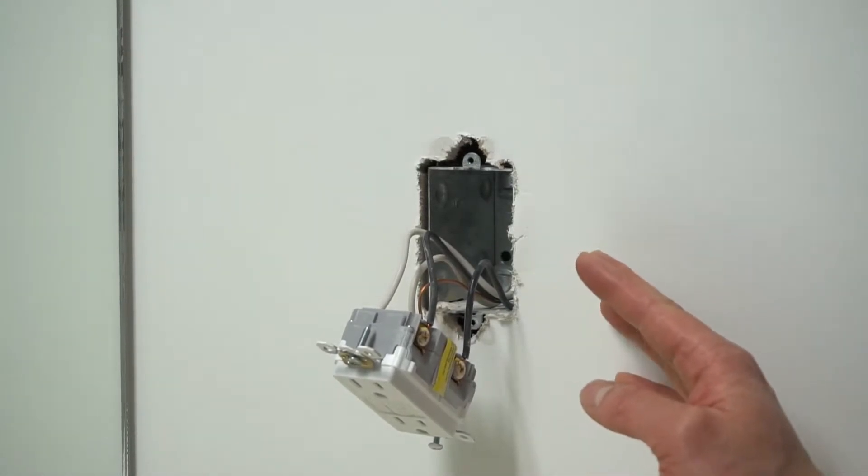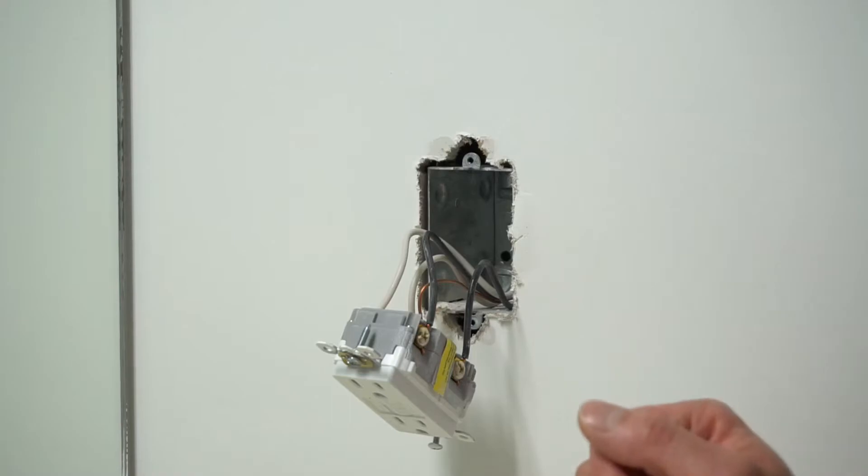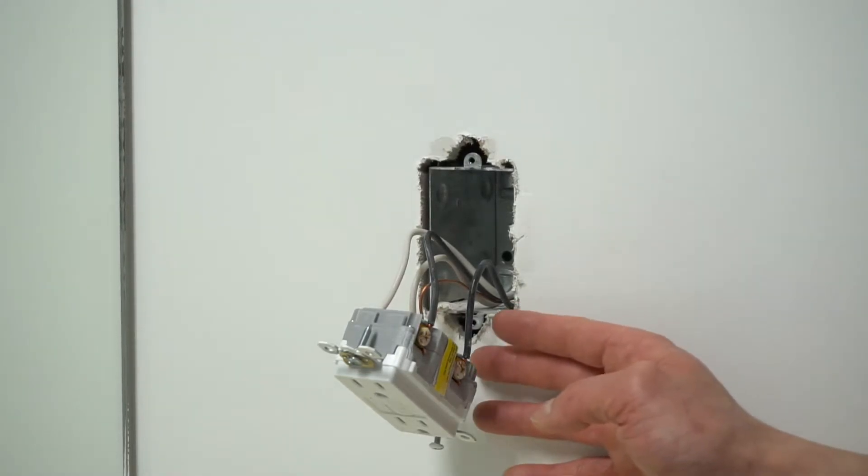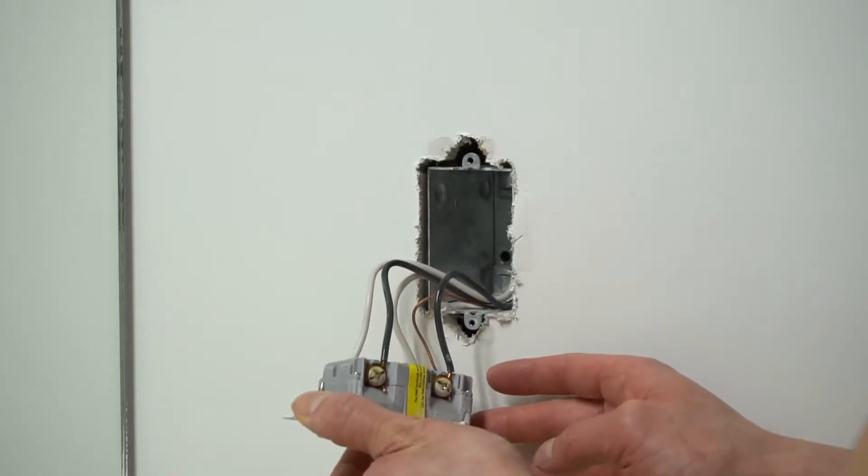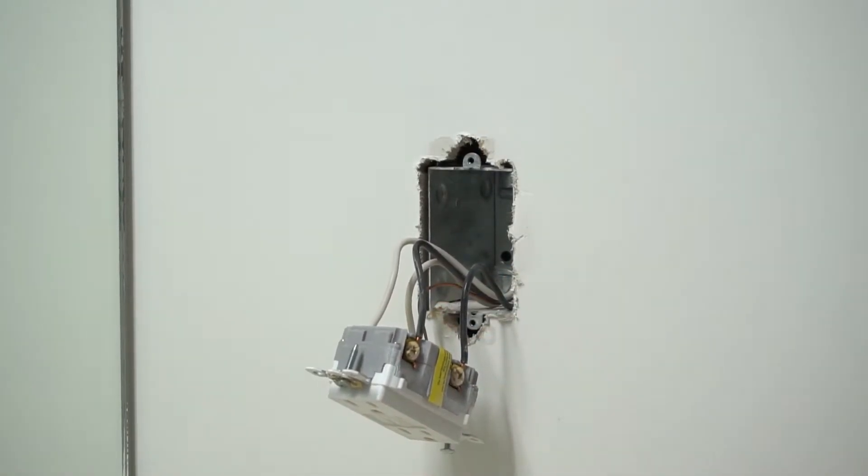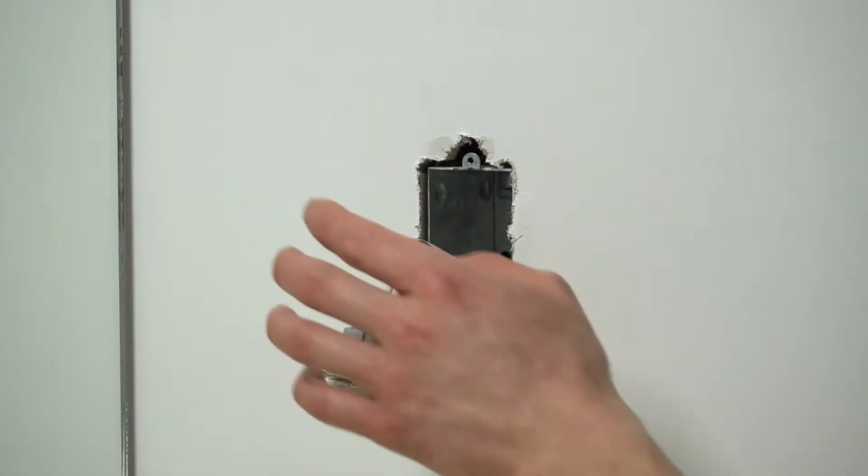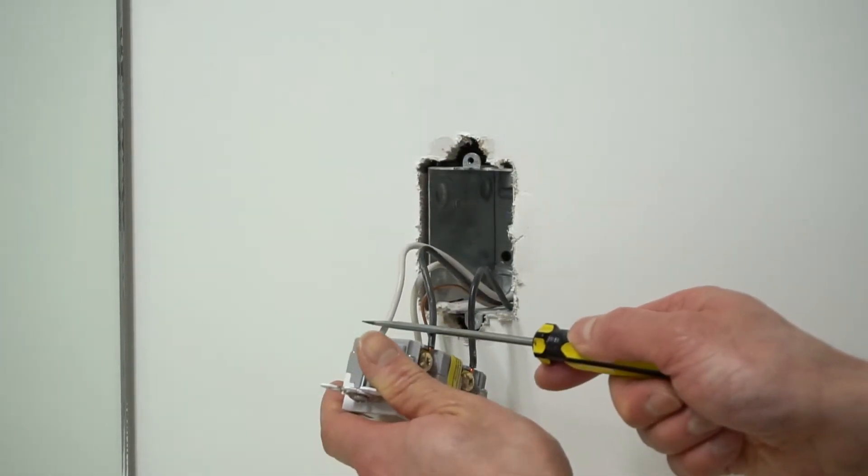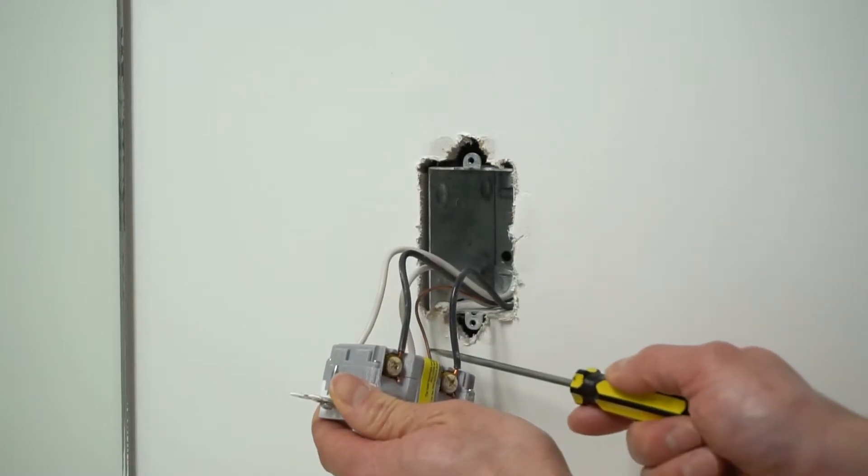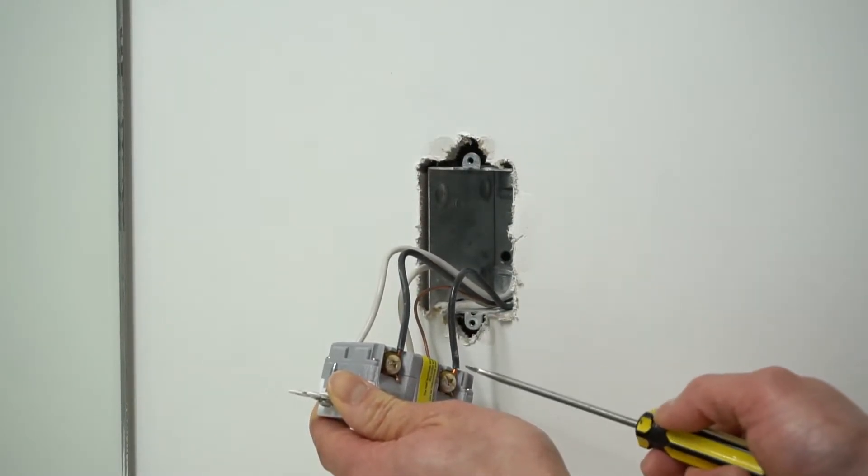That's only if your breaker panel is labeled correctly and that you have switched off the correct breaker. Now it's very important when you take off these wires from the plug, do not mix and match. Remember that one set is the load side and the other side is the line side, the feed from the panel.